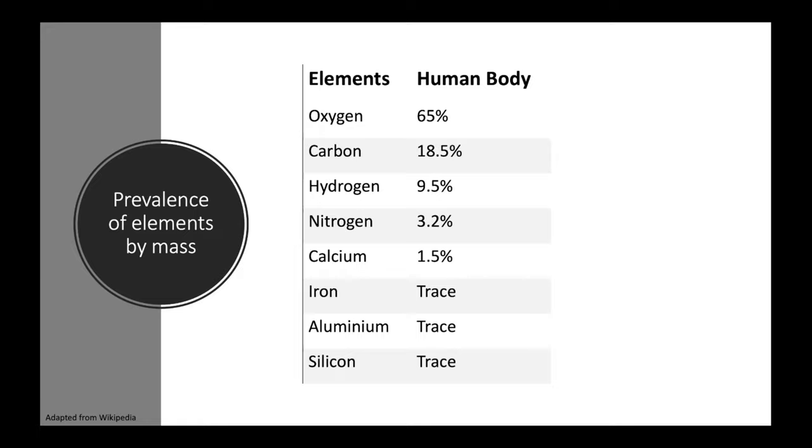If we contrast this to the Earth's crust, which is non-living, we see that carbon, hydrogen and nitrogen are present in only trace amounts, while oxygen, silicon, iron and aluminium are the major components of the crust.